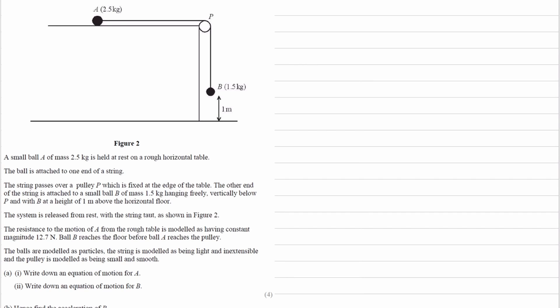The system is released from rest, the string is taut, and it says in the question that the resistance to motion of A from the rough table is modelled as having a constant value of 12.7, that would be acting towards the left. The reason it acts towards the left is because B will want to fall down, and that will pull A along with it towards the right, so friction always acts in the opposite direction to motion, therefore towards the left.